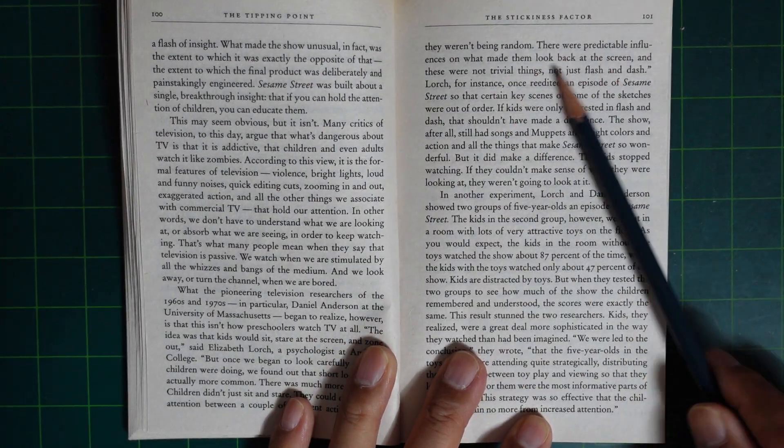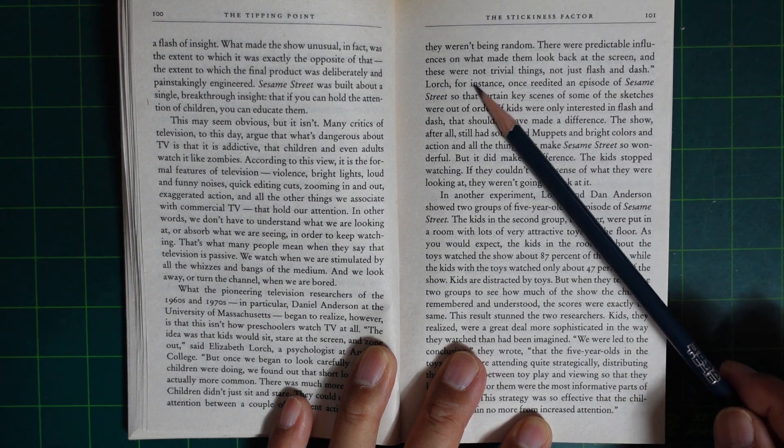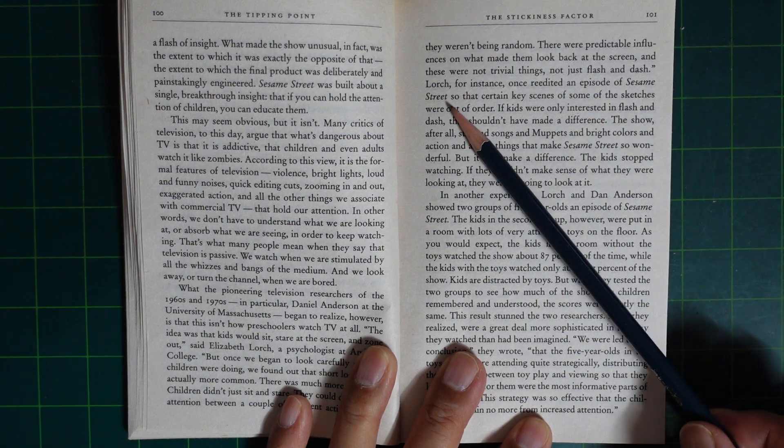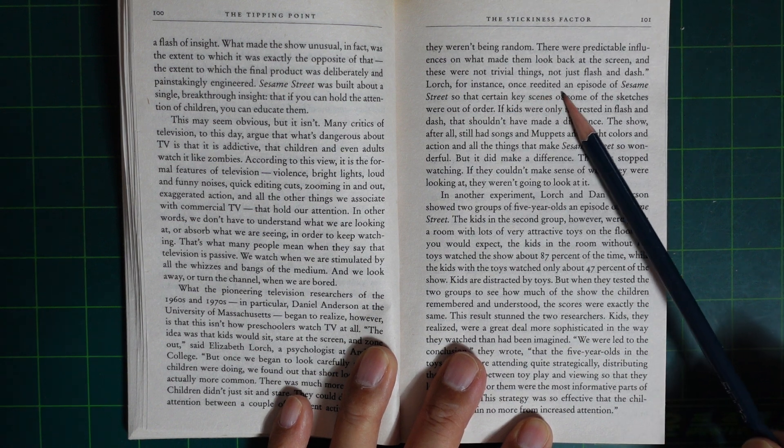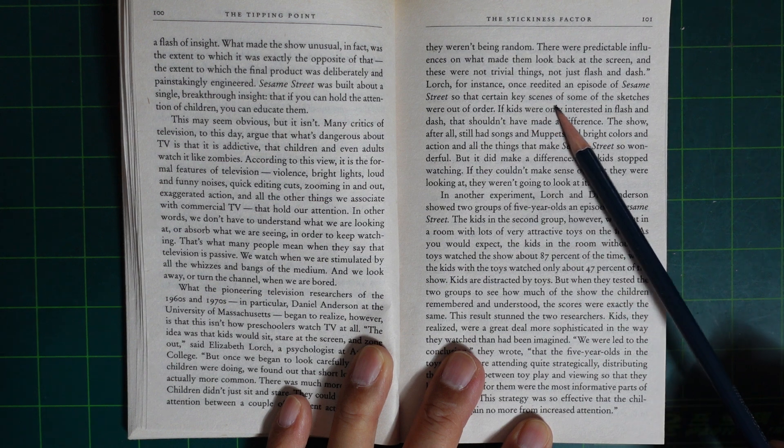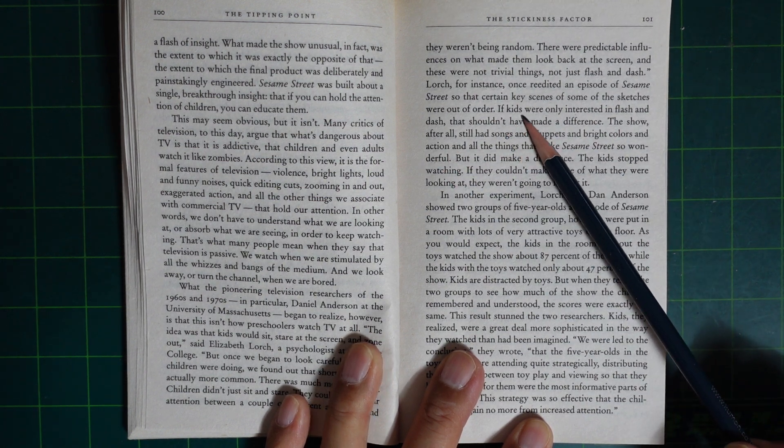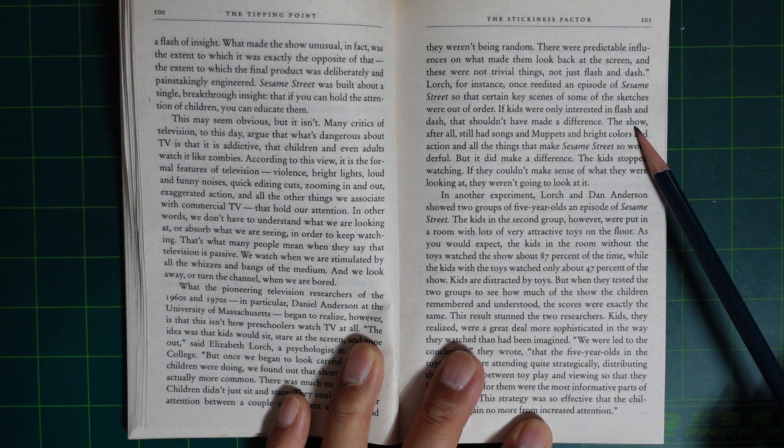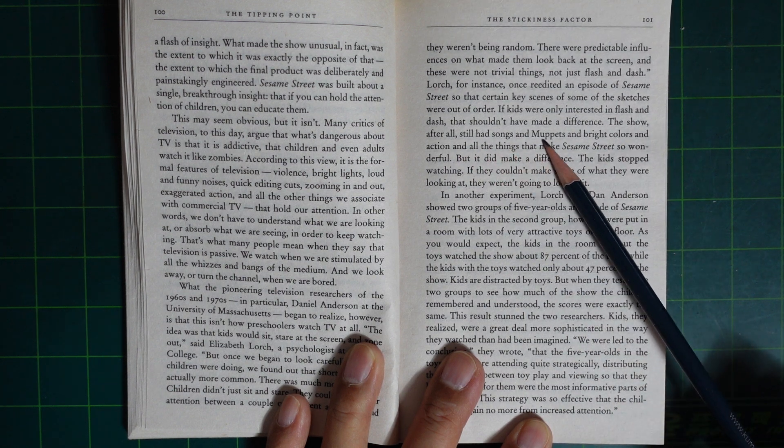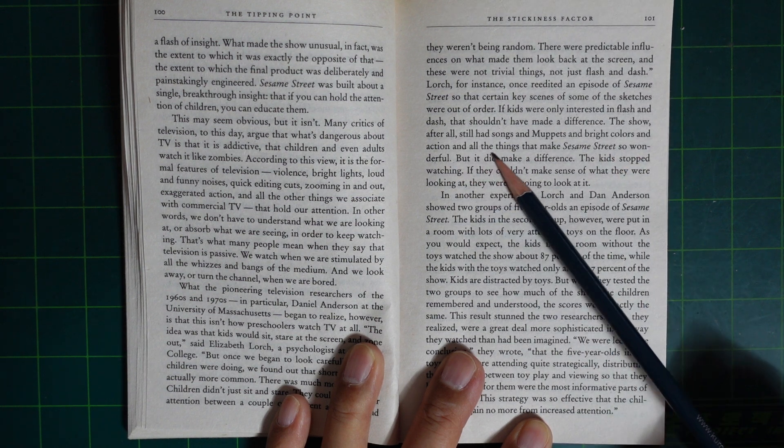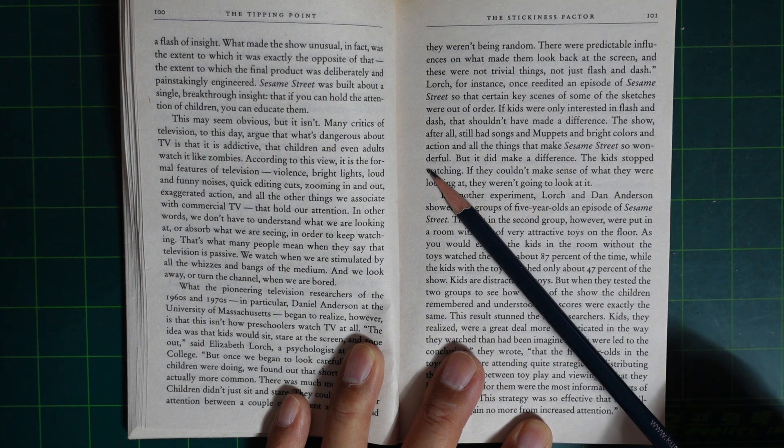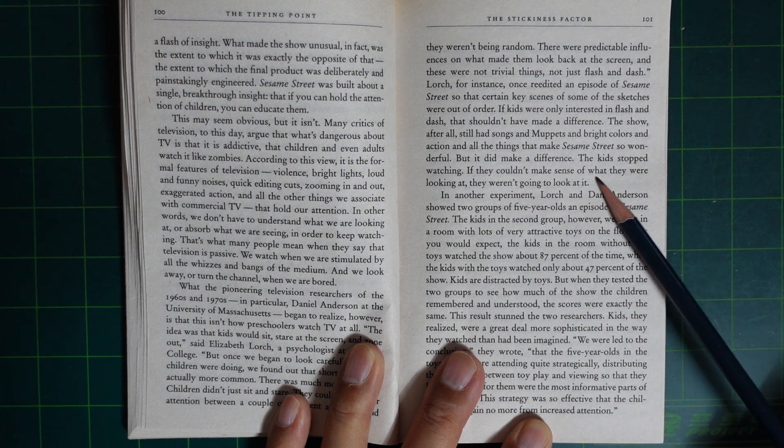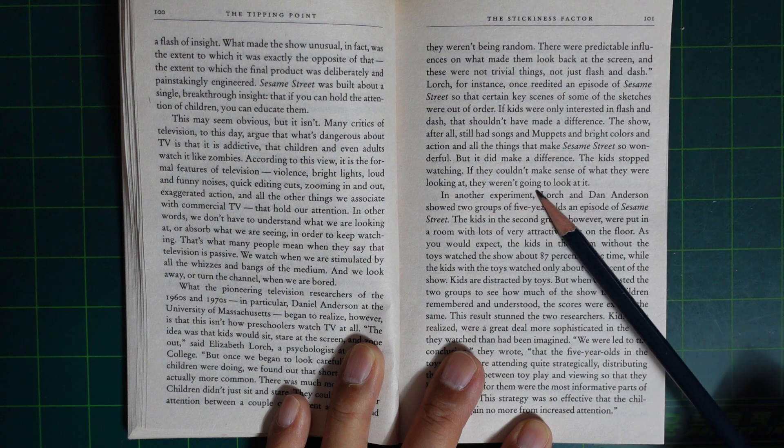There were predictable influences on what made them look back at the screen, and these were not trivial things - not just flash and that's it. Roche, for instance, once re-edited an episode of Sesame Street so that certain key scenes of some of the sketches were out of order. If kids were only interested in flash and glitz, it wouldn't have made a difference. The show still had songs and Muppets and bright colors and action. But it did make a difference. The kids stopped watching. If they couldn't make sense of what they were looking at, they weren't going to look at it.